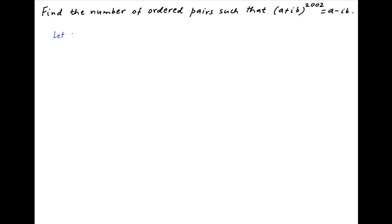Let's denote a plus ib by the complex number z. Therefore, the conjugate of z is equal to a minus ib. Therefore, the absolute value of z is equal to the square root of a squared plus b squared.